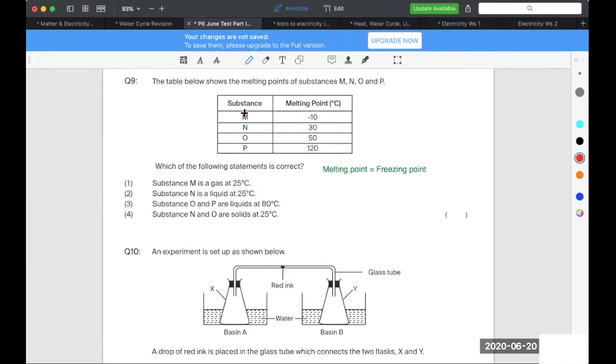So anything after negative 10, anything more than negative 10, so means negative 10 after that is what? Negative 5, 0, then 10, then 20. Anything more than that it will be what state? Tell me. So anything more than these temperatures, anything more than negative 10, anything more than 30, anything more than 50, anything more than 120, what states will it be? Liquid or gas. Liquid or gas. I like that.